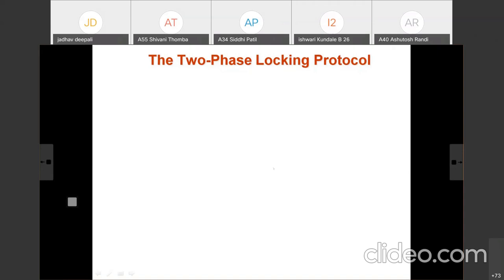The next protocol we are going to see is the two-phase locking protocol. As its name suggests, it works in two phases. This is a protocol which ensures conflict serializability. This type of question is normally asked in GATE question papers — for example, which protocol ensures conflict serializability? The answer is: two-phase locking protocol ensures conflict serializability.